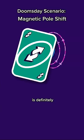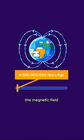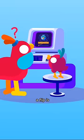Earth's magnetic field is definitely going to flip. In Earth's 4.5 billion year history, the magnetic field has flipped many times. So, how do we know a flip is going to happen?